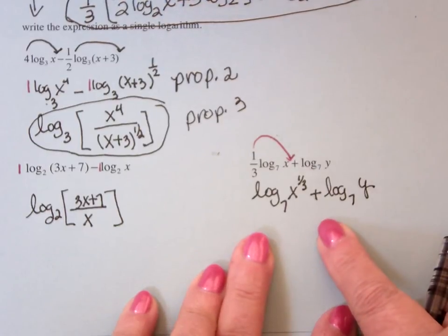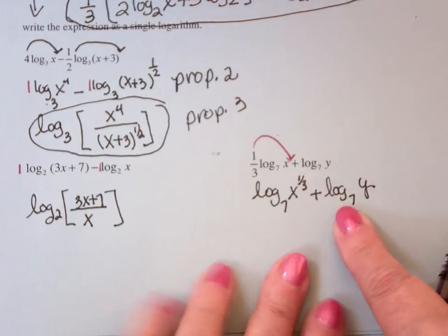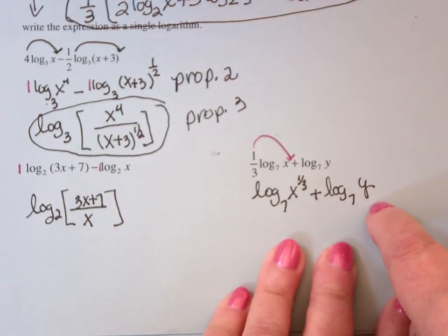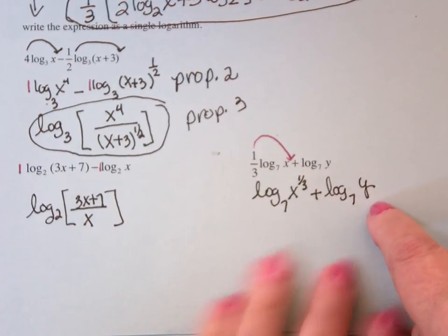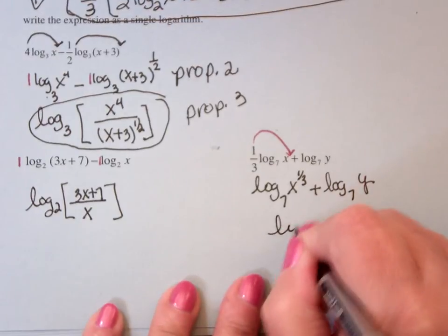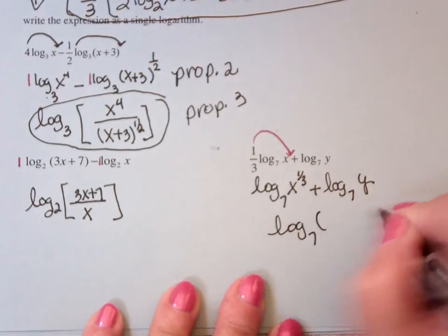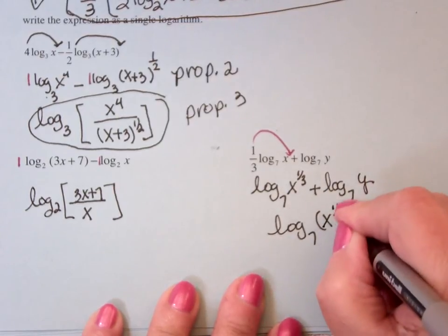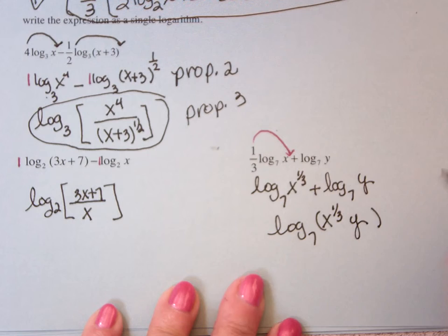Now, both coefficients are 1. This is a plus, which means everybody's plus, which means that I'm looking now at a multiplication of the arguments. So this becomes log base 7 of something, and it's the product of these two guys. So it's x to the 1/3 multiplied times y.